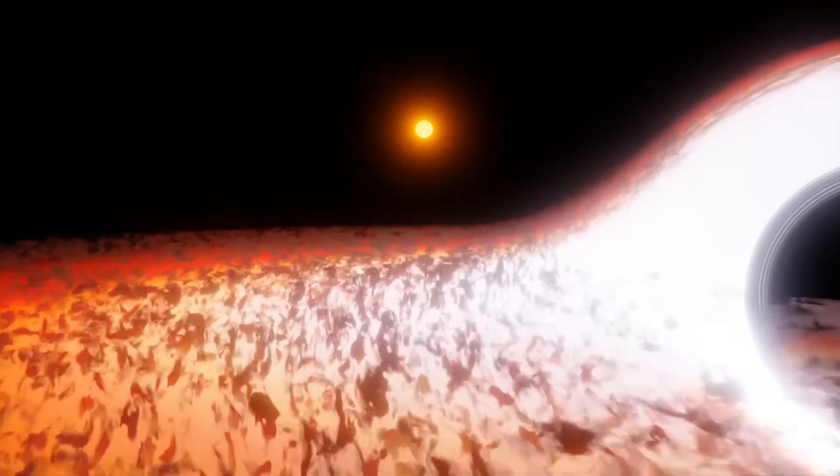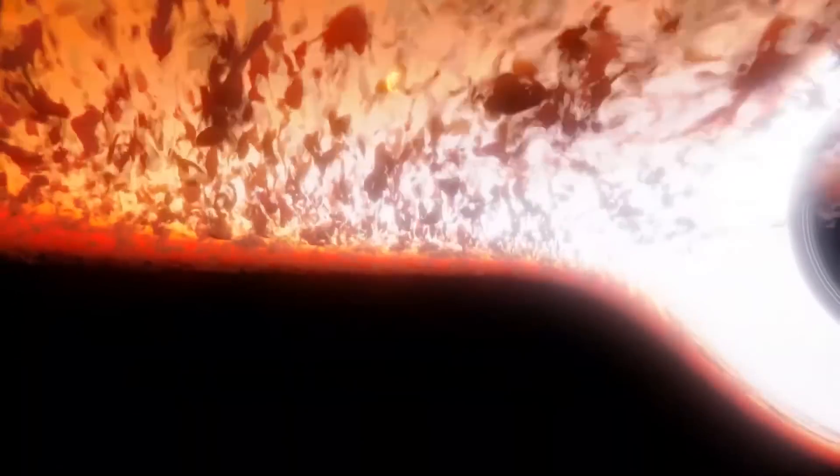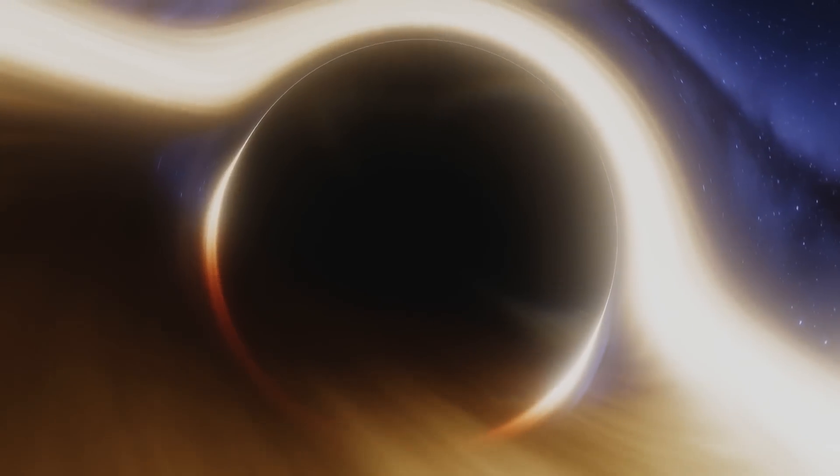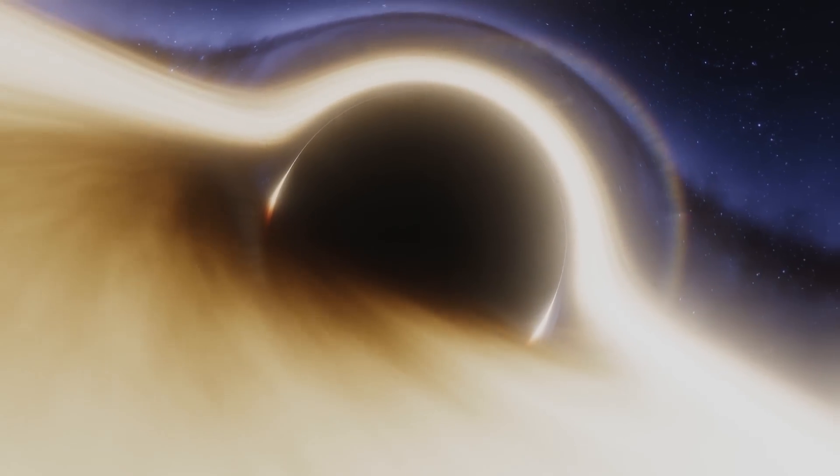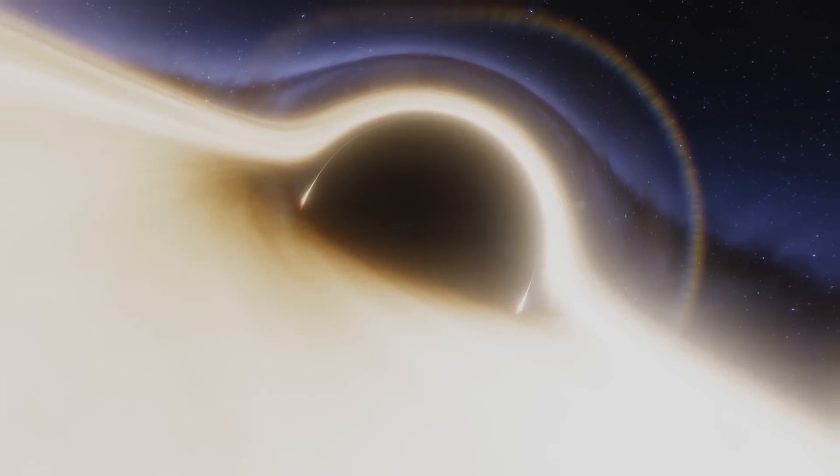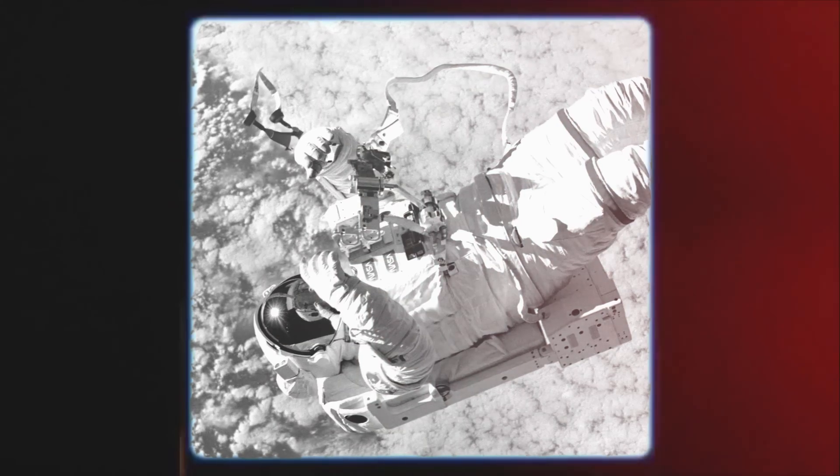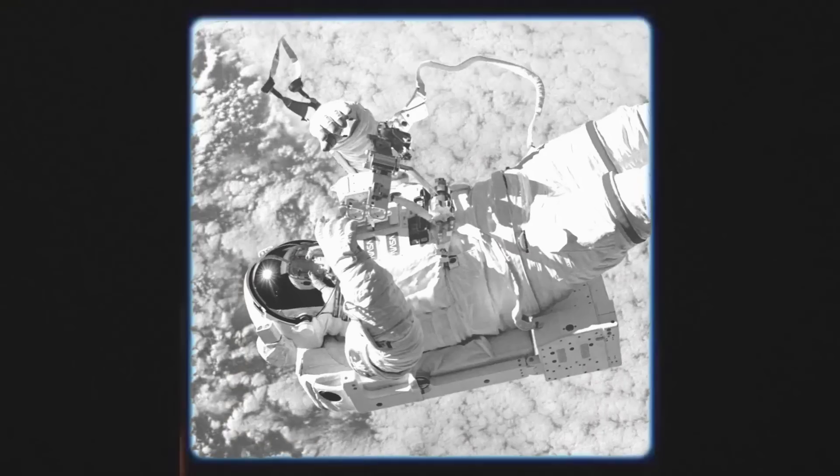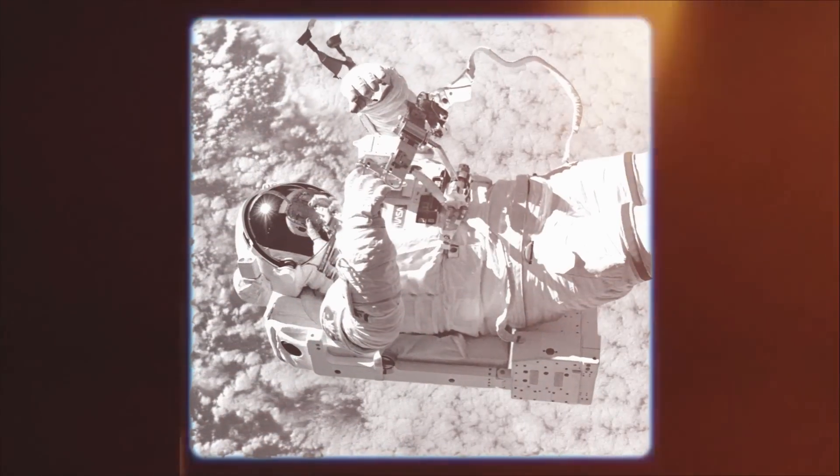Things would get much worse as you cross the event horizon. Assuming you were to approach the black hole from the bottom up, the gravitational pull on your feet would be much greater than the pull on your head as you near the center. You would become like spaghetti, stretched and compressed. Scientists have given this phenomenon the moniker spaghettification.